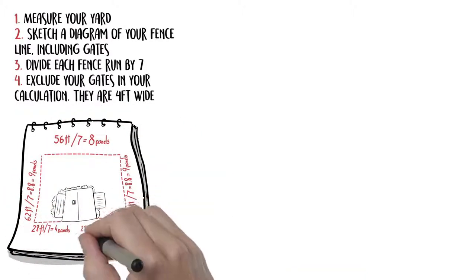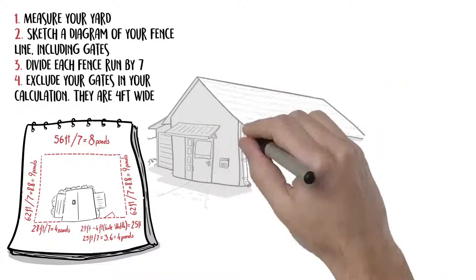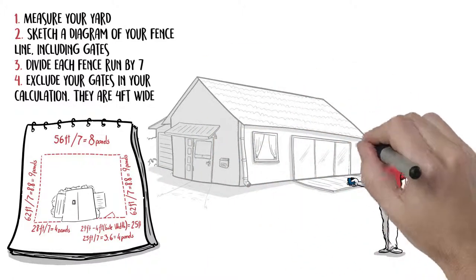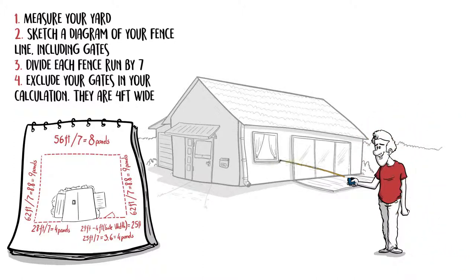To calculate how many panels you need, divide each fence run by seven, because that's how wide the panels are, rounding decimal points up. Remember to exclude your gates in your calculation. They are four feet wide.